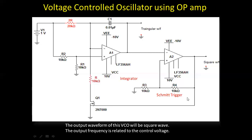There is a second operational amplifier A2, and this particular configuration is the Schmitt trigger — an inverting symmetrical Schmitt trigger circuit. The feedback resistors R4 and R3 give a beta of 0.5 since both resistors are equal: R3 divided by (R3 + R4). So half of the output is fed back to the non-inverting terminal. The output of the Schmitt trigger is applied to the gate of MOSFET Q1, which is turned on and off by the plus and minus saturation voltages generated by the Schmitt trigger circuit.